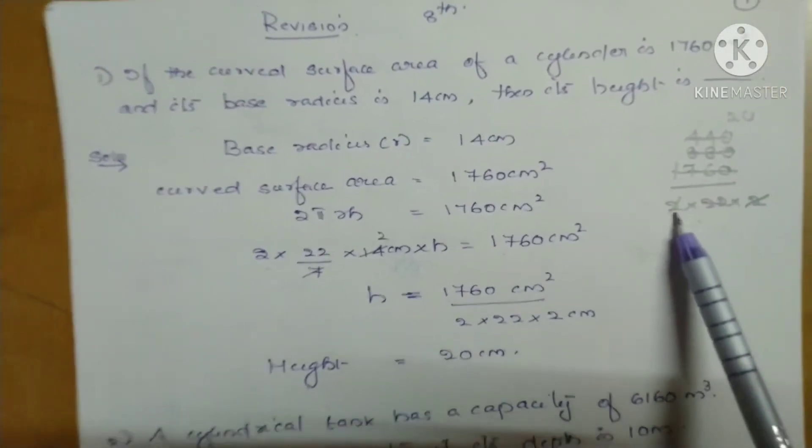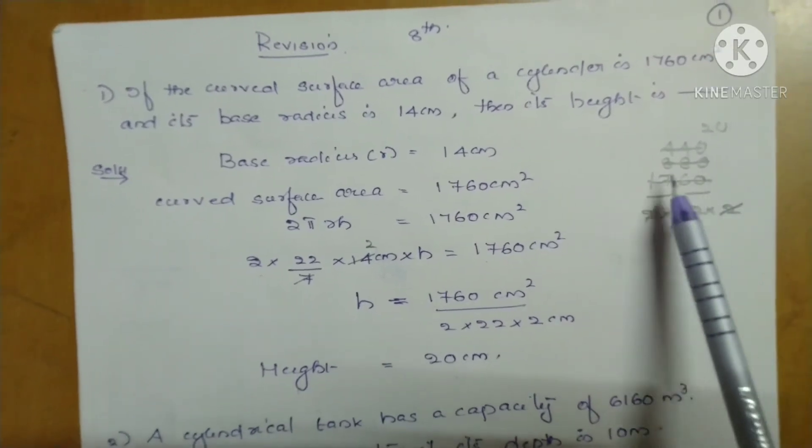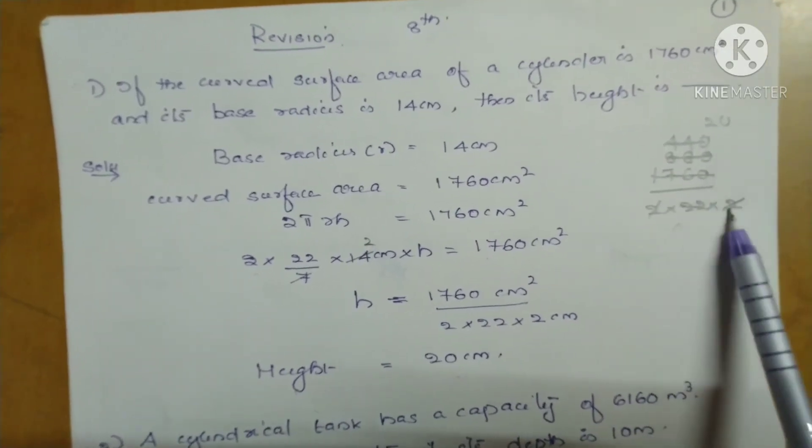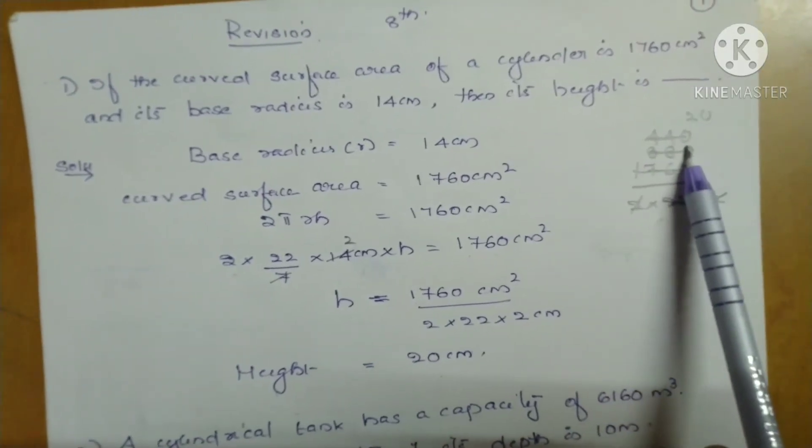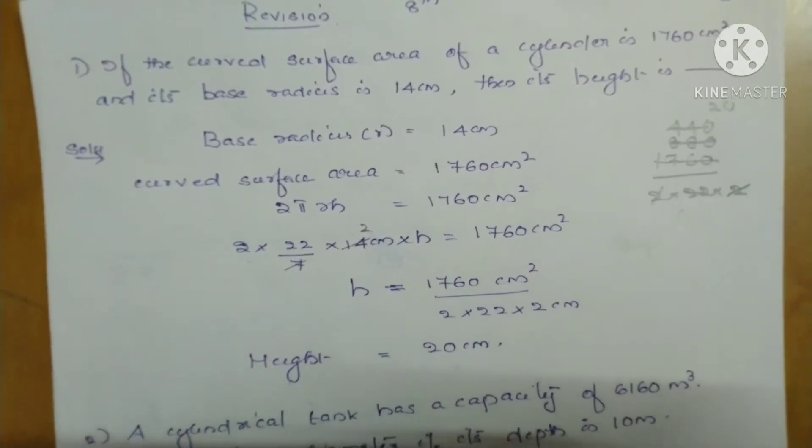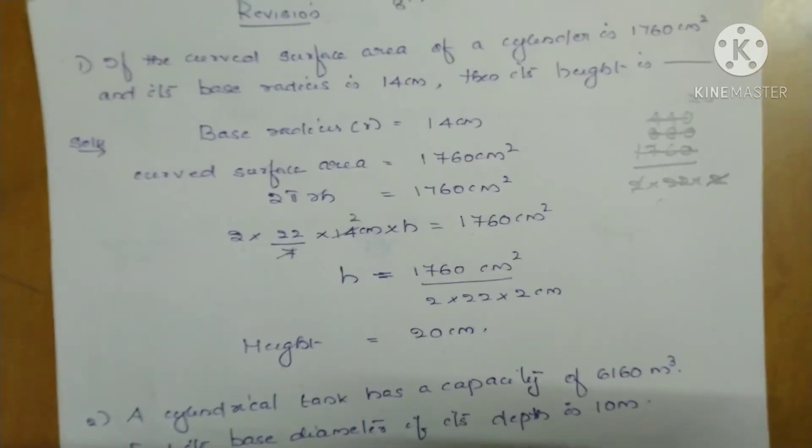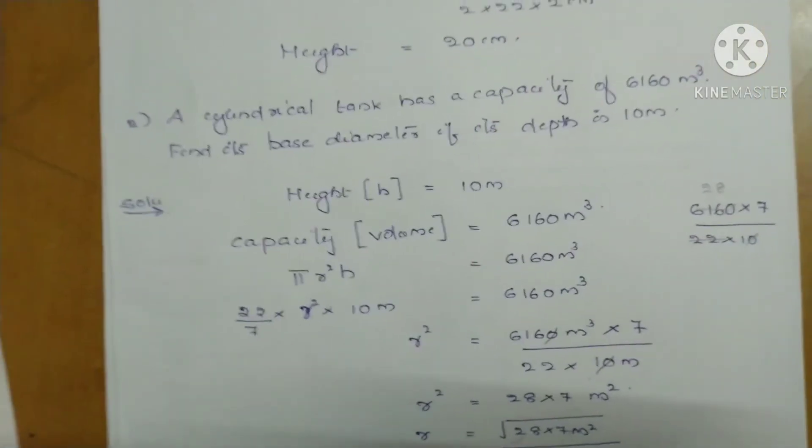So here simplification is given: 1760 when we are dividing by, first we can do by 2, then it is coming 880. Then again we can do by 2, then we are getting 440. Then 440 when we are doing by 22, we are getting 20. So height of the cylinder is 20 cm. Now second question.